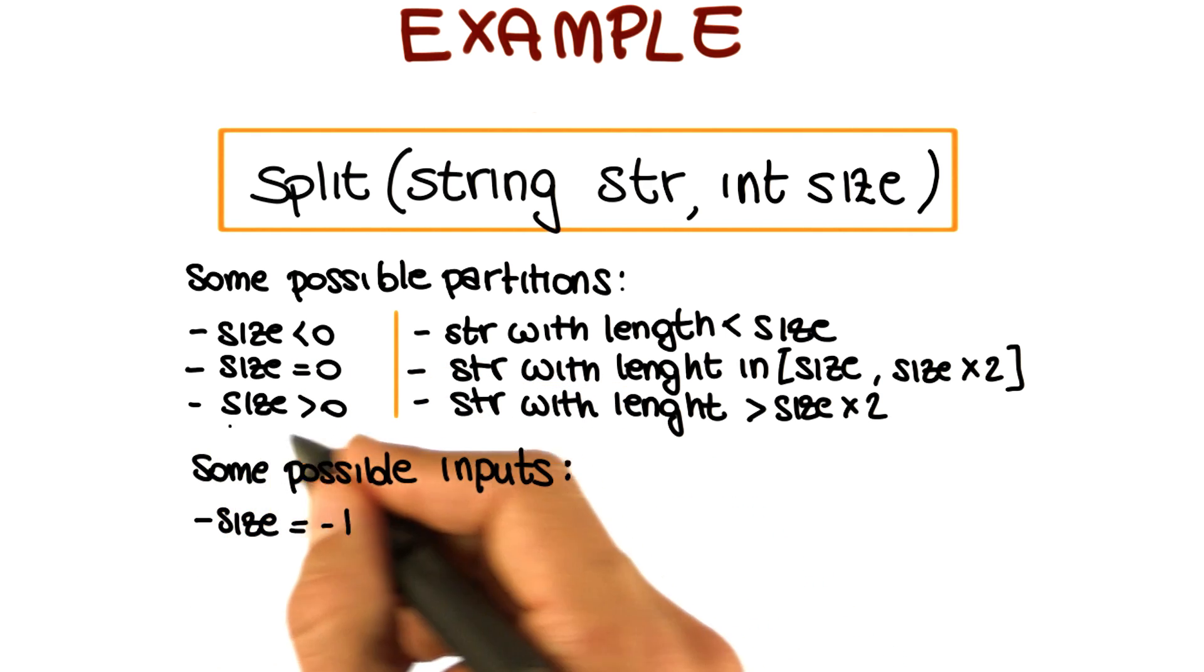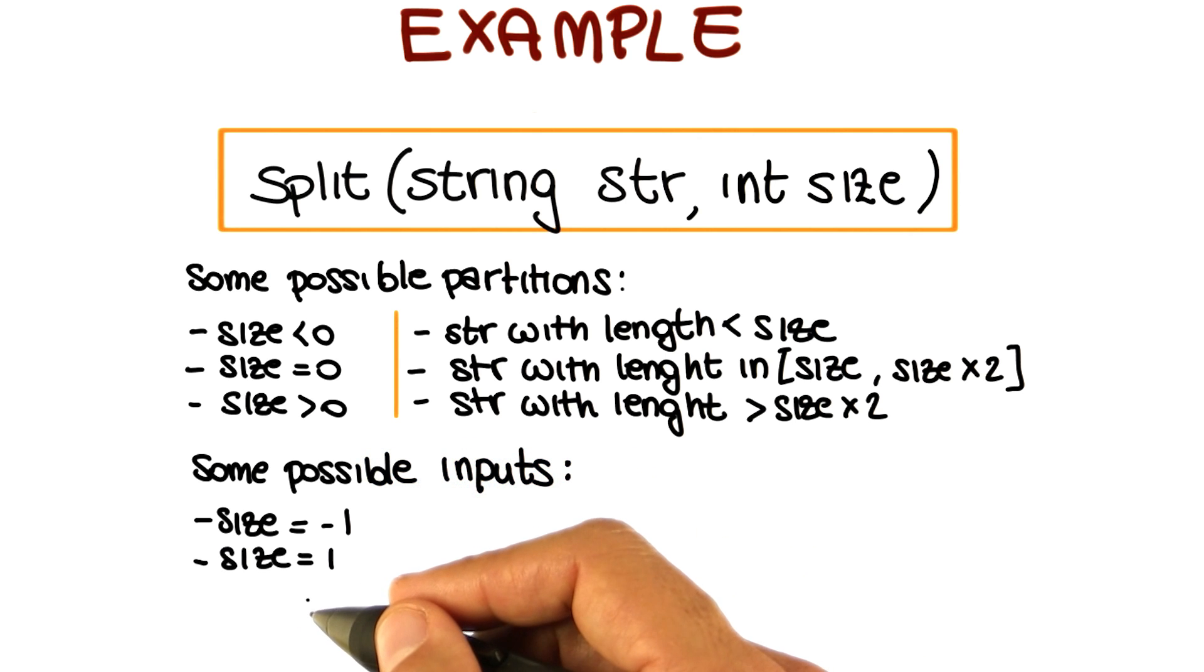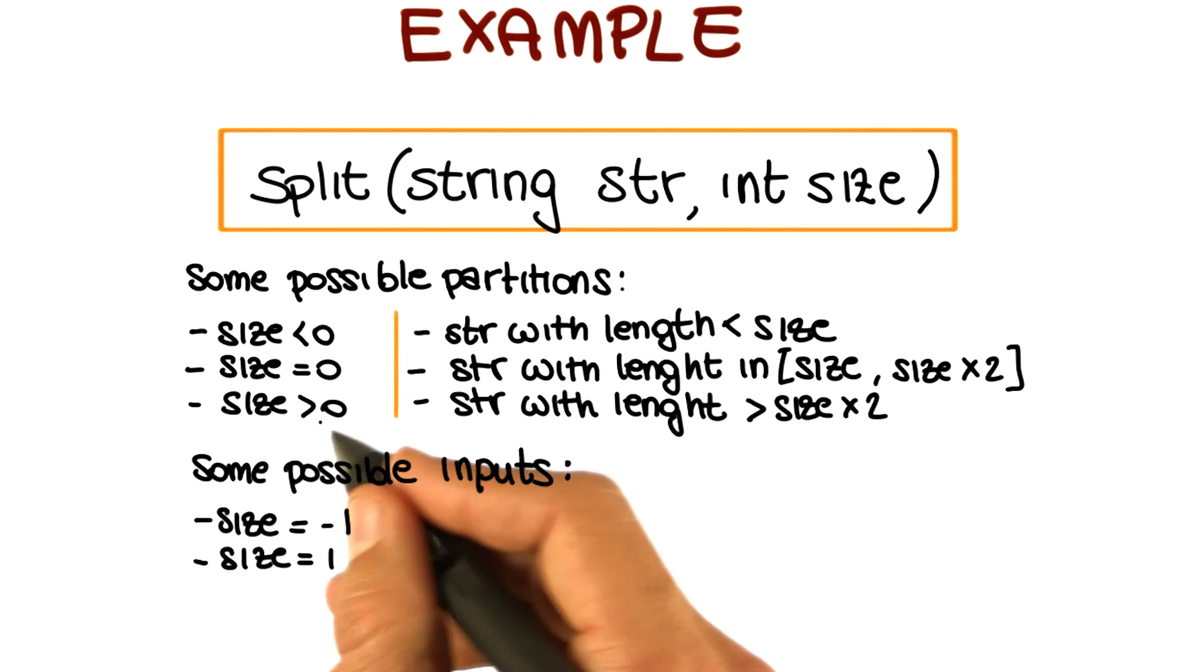If we look at the third subdomain, a possible interesting case is the one of size equal to one for the same reasoning that we used for the previous subdomain, for size less than zero. And let's try to select another one for this subdomain.